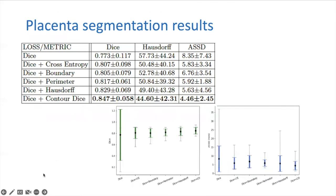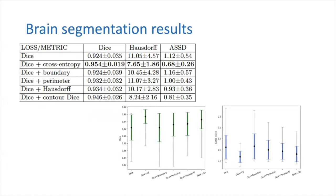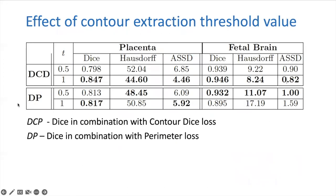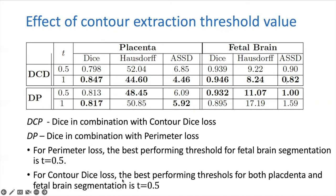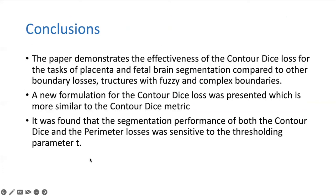Here you can see segmentation results for the placenta. The combination of dice with contour dice reached the best result when comparing to both the other contour losses and the combination of dice with cross entropy loss. For the brain segmentation task, the best result was reached using the dice with cross entropy loss, and the second best was reached with contour dice loss, showing the importance of comparing also to the dice with cross entropy loss. You can see that the thresholding parameter of the binarization of the segmentation results influences the loss function, where the contour dice reaches best results with a threshold of 1 and the perimeter loss reaches best results with a threshold of 0.5. Thank you very much.